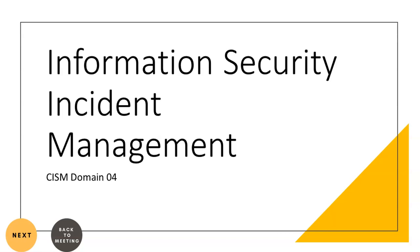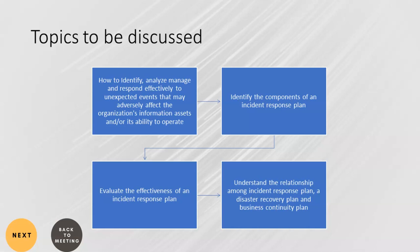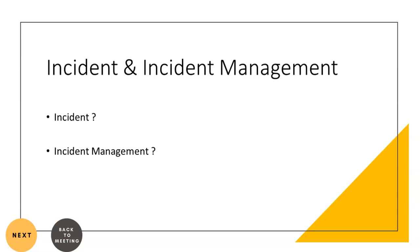I will cover the process to identify, analyze, manage, and respond effectively to unexpected events — events which have an impact on the CIA (confidentiality, integrity, and availability) value of information systems. We will also discuss the incident response plan, identify its components, evaluate its effectiveness, and map the relationship of the IRP with the disaster recovery plan and business continuity plan.